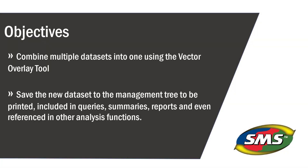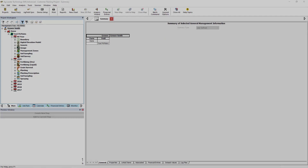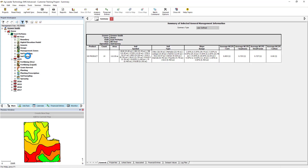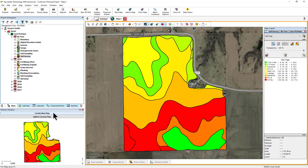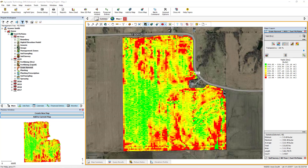In this tutorial, you will learn how to combine multiple datasets using the Vector Overlay tool and save the resulting dataset to the management tree. Begin by creating a new map and add all datasets to the current map that you intend to use in the Vector Overlay tool.